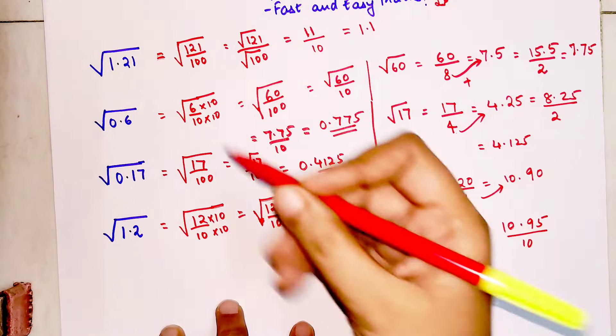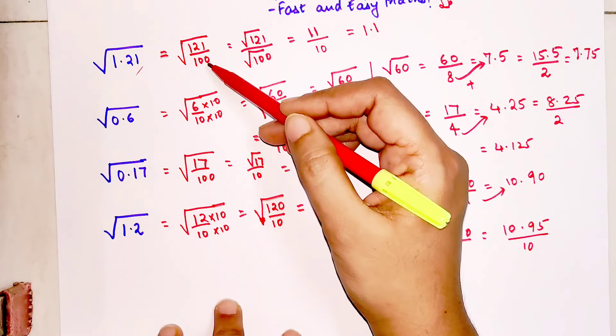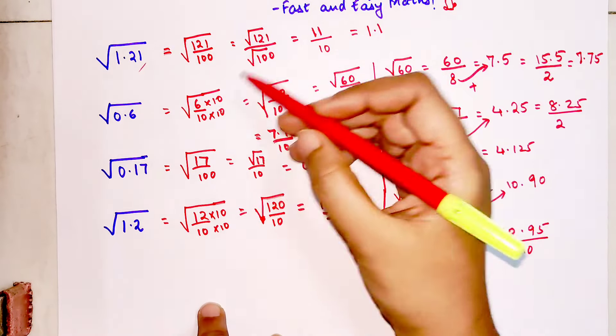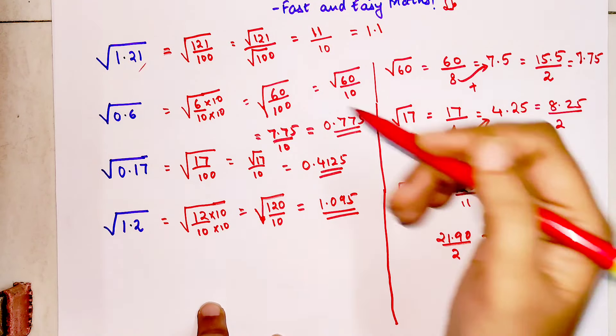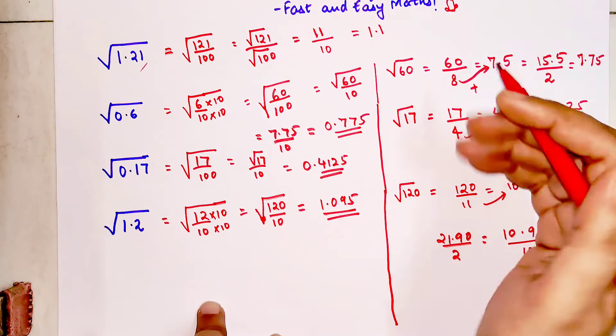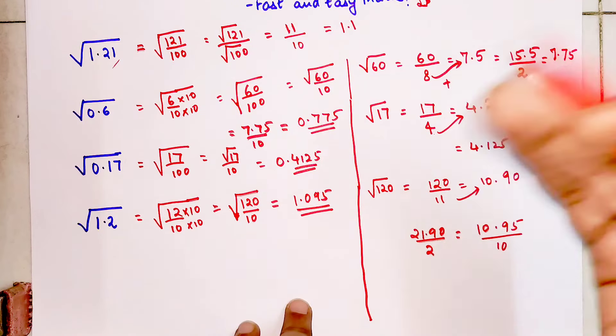I hope you're getting the hang of it. Very quickly, just simply revise this. Always convert the number in the form of a fraction and make sure that the denominator is in the form of 100. If it's not, then you multiply and make it 100. Because removing square roots of your denominator, that will be just 10, so final answer you just have to divide by 10.